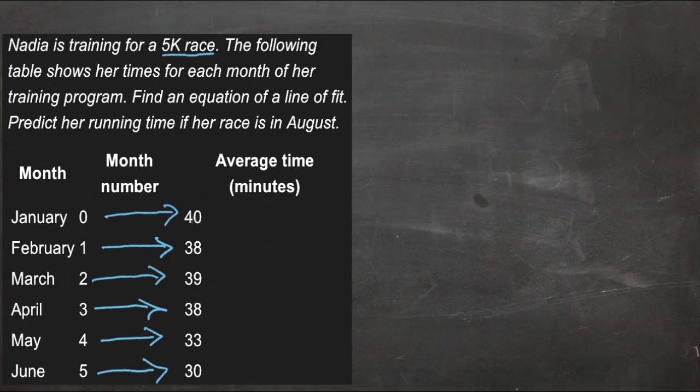So overall, her time definitely went down. She obviously improved with practice, but it's not a straight progression. We have this little bump in here between February and April, and her progression was much better between April and May than it was any other consecutive months. So what we need to do is get an overall view of how her progression looked over time.